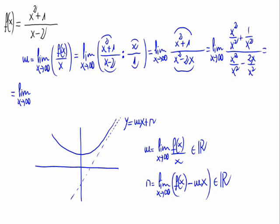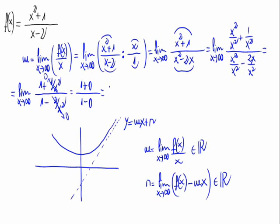Simplifying, everything on the limit that is divided by x squared equals 0. So we end with 1 plus 0 divided by 1 minus 0, which is 1. Since 1 is a real number, we are doing great in our search of an oblique asymptote.